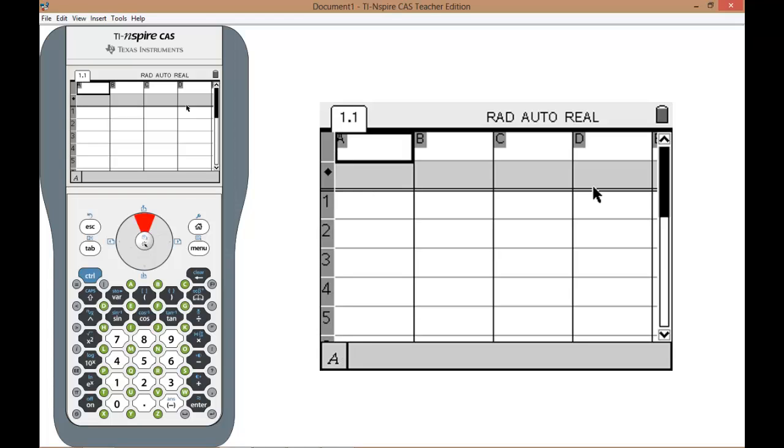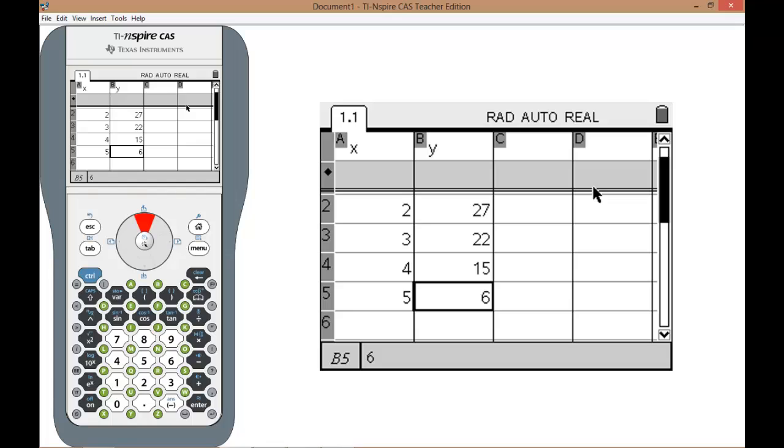Now going up to the top the first thing you need to do is to label columns, column x and y and then enter your data. So in this case it's 1, 2, 3, 4, 5 as the x values, 30, 27, 22, 15 and 6 are the y values. Now we've got those in our list and spreadsheet we need to plot them.